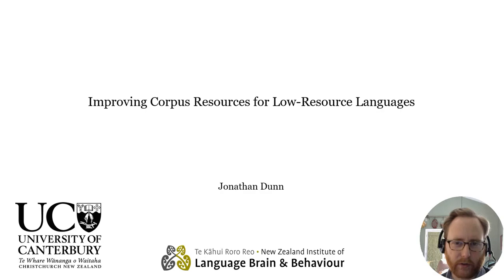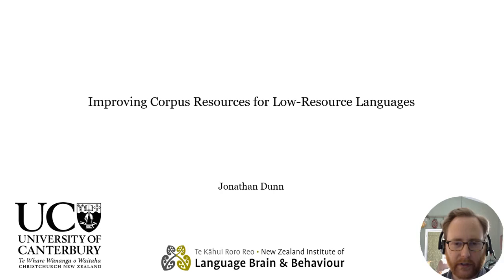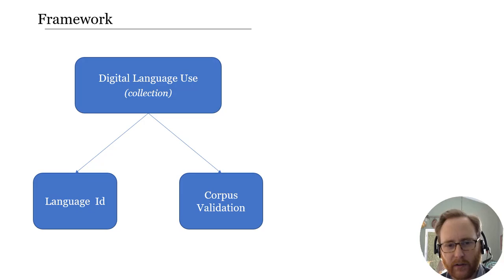Hi, I'm Jonathan Dunn from the University of Canterbury in New Zealand. I want to talk about some of the work we've been doing on improving corpus resources for low-resource languages and also for low-resource populations in the form of dialects. As NLP depends on training corpora of various kinds, the lack of these resources is really a bottleneck in terms of having good language technology. I want to divide my focus between language identification and corpus validation.